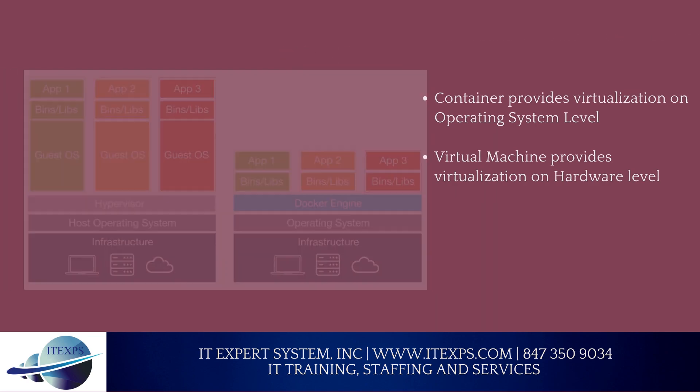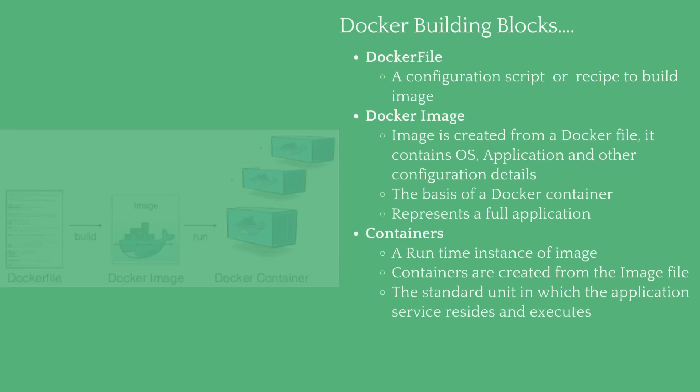Now let's clarify Docker building blocks. First: Dockerfile — a configuration script or recipe to build an image. Second: Docker image — created from the Dockerfile, it contains a minimal OS, application, and other configuration details. It is the basis of a Docker container and represents a full application.